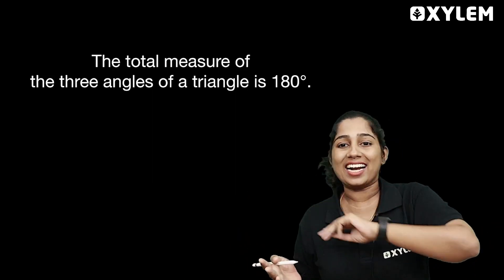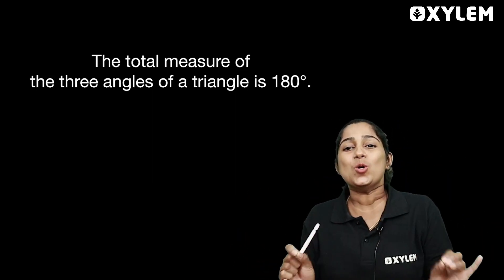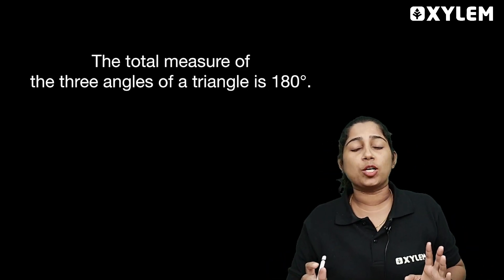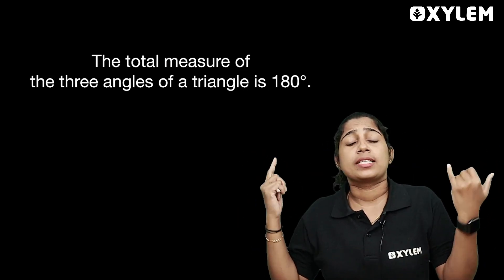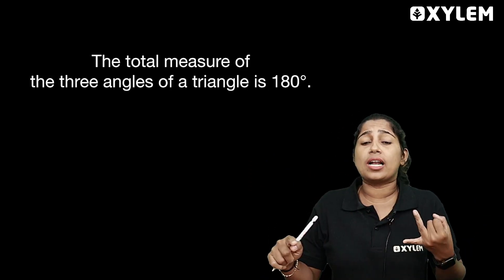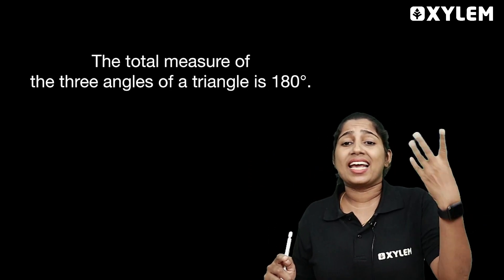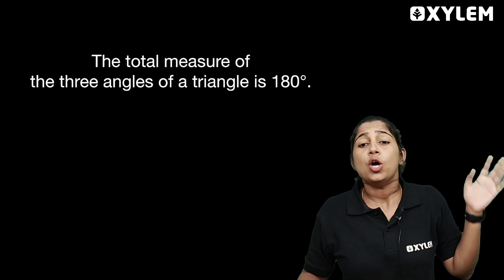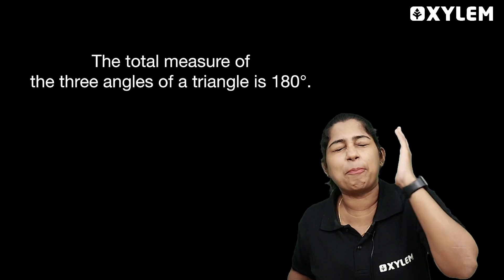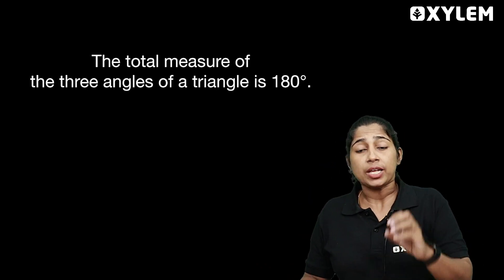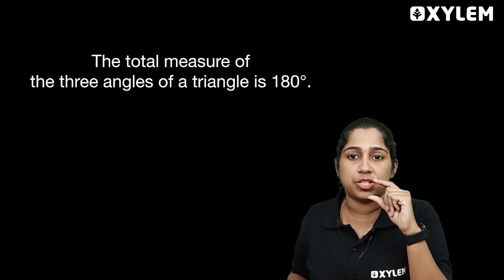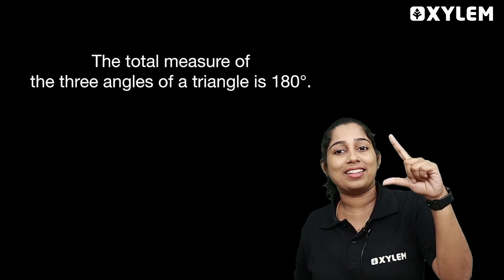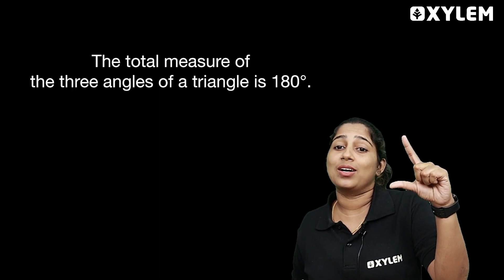The total angle of the triangle is 180 degrees. If you have studied these angles, the total angle of the 3 angles of a triangle is 180 degrees. If you add 3 angles of a triangle, you get 180 degrees.